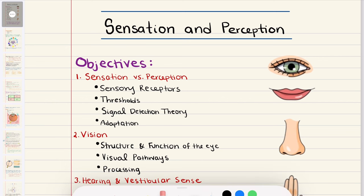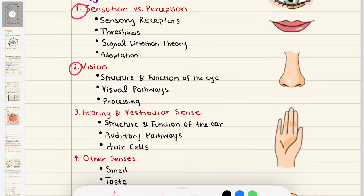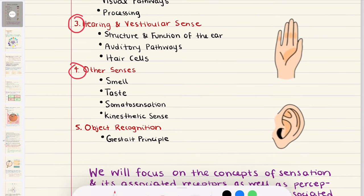What we're going to cover in this chapter are the following objectives. First, we're going to talk about sensation versus perception, touching on sensory receptors, thresholds, signal detection theory, and adaptations. Then we'll move into Vision, covering the structure and function of the eye, visual pathways and processing. The third objective covers the ear — structure, function, auditory pathways, and hair cells. Fourth, we'll cover other senses: smell, taste, somatosensation, and kinesthetic sense. Our last objective is about object recognition, where we'll cover Gestalt's principles.